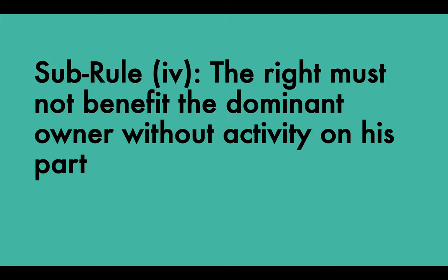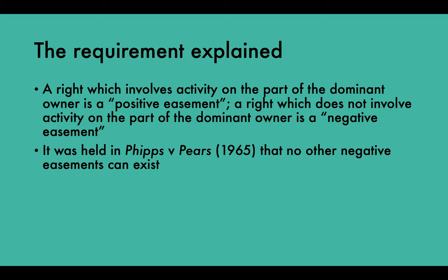Sub-rule four: the right must not benefit the dominant owner without activity on his part — it demands activity on the part of the dominant owner. A right which involves activity on the part of the dominant owner is a positive easement; a right which does not is a negative easement. The law recognises only four kinds of negative easements: the right to the flow of water through an artificial channel, the right to a flow of air, the right to a flow of light to a particular aperture, and the right to support of buildings on the dominant land from the servient land. It was held in Phipps v Pears that no other negative easements can exist.